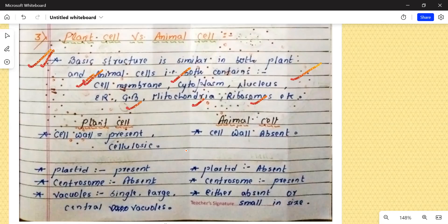So, yahan par hum log keval baat karenge about the differences. Plant cell ke case mein cell wall payi jati hai and this cell wall is composed of cellulose. Yeh cellulose ka bana hota hai. In case of animal cell, cell wall absent hote hai.